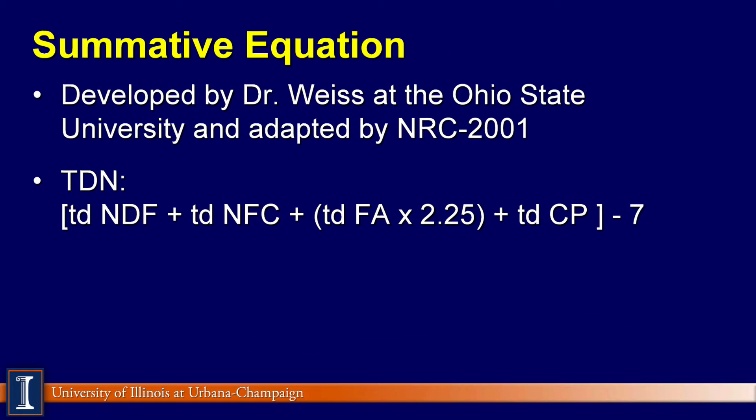Plus truly digestible NFC — which of course is your sugars, starches, and pectins — plus the truly digestible fatty acids (FA), your fats and oils, with that 2.25 factor again as we talked about earlier. And finally, truly digestible crude protein. Then you subtract 7 as a constant, which comes from a regression equation. That is how we now calculate TDN in our models and in the new NRC.